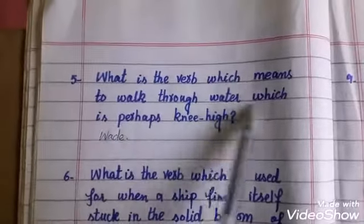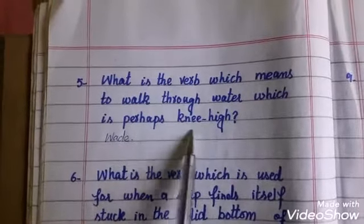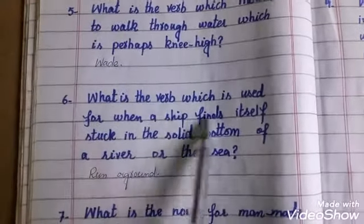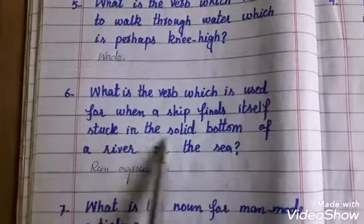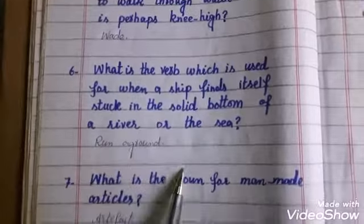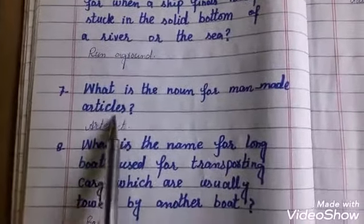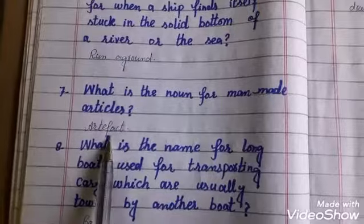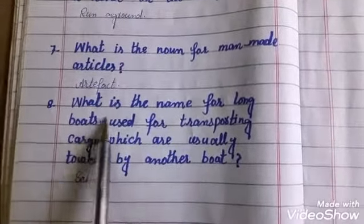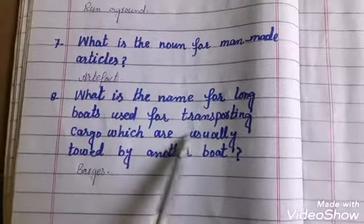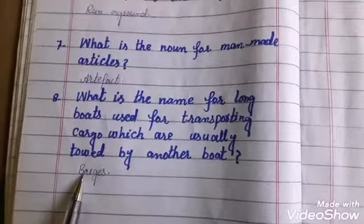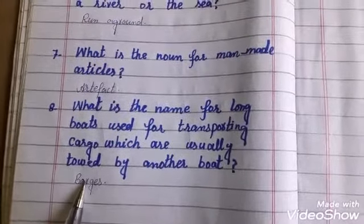Question five: what is the verb which means to walk through water which is perhaps knee-high? Question number six: what is the verb which is used for when a ship finds itself stuck in the solid bottom of a river or the sea? The verb is: run aground. Question number seven: what is the noun for man-made articles? The noun is: artifact. Question number eight: what is the name for long boats used for transporting cargo which are usually towed by another boat? The name is: barges.